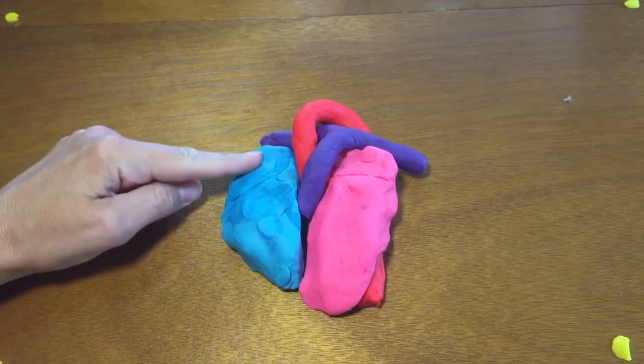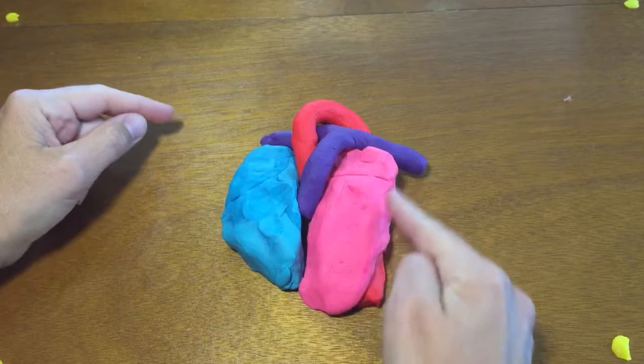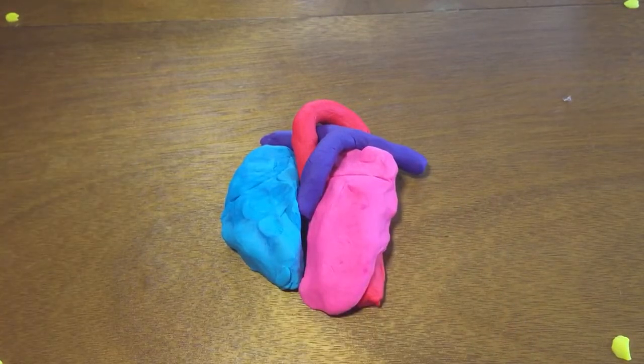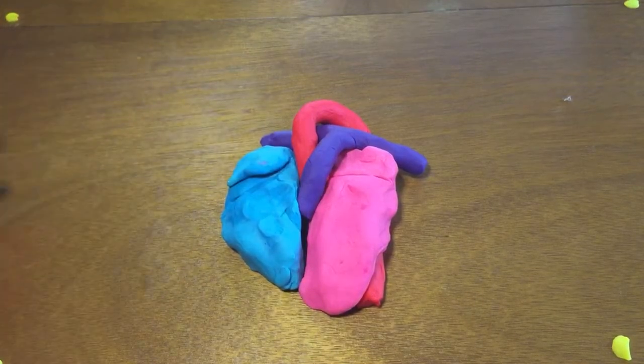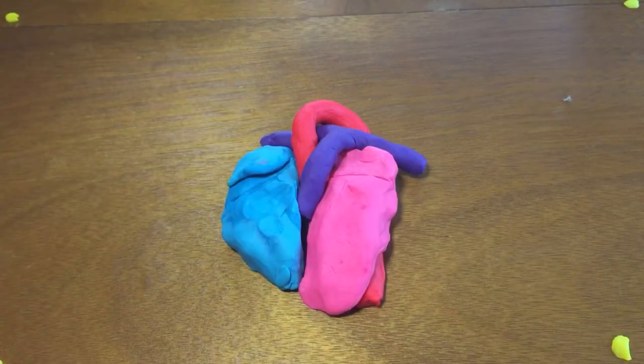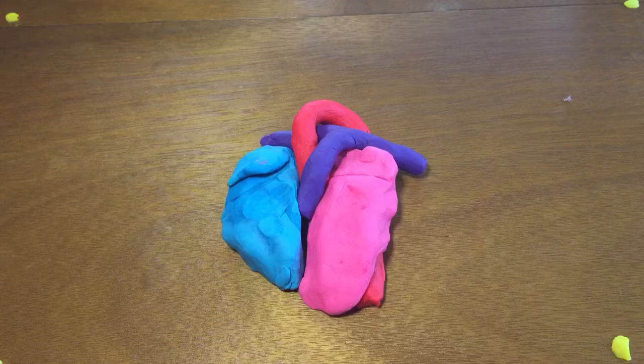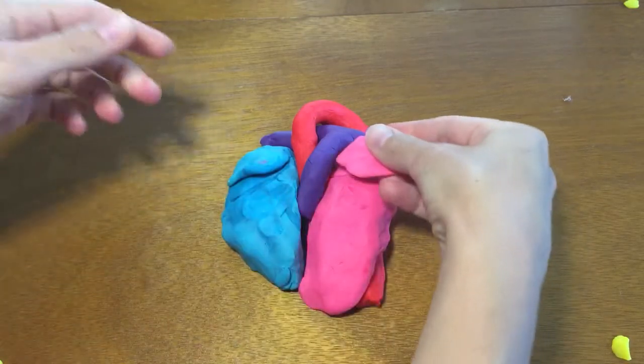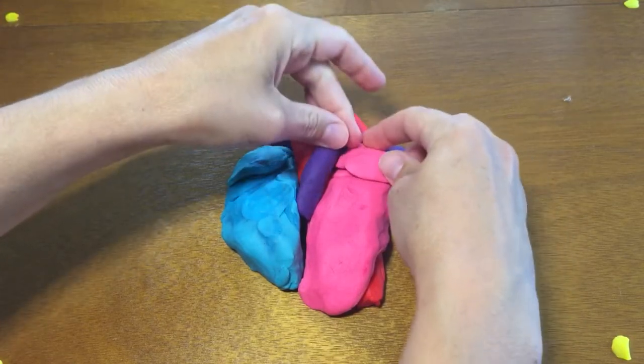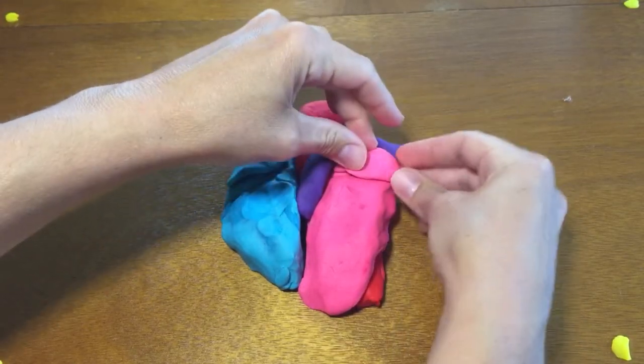All right, so we have right atrium, right ventricle, left atrium, left ventricle. And the atria have these little floppy ear-like appendages on them called auricles. Auricle A-U-R-I-C-L-E, meaning of the ear, because somebody thought these looked like little ears hanging off of the atria.